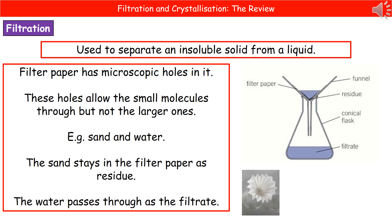One thing you should have been taught when you did this experiment in class is how to fold the filter paper properly — this is called fluting it. As opposed to just folding in half twice and sticking it in, you should fold it to make that little fluted appearance, as you can see in the diagram towards the bottom right. The reason for doing it this way is that you get a much larger surface area for the filtrate to pass through, making it much quicker. So always flute it to increase the surface area and therefore make the process happen faster.